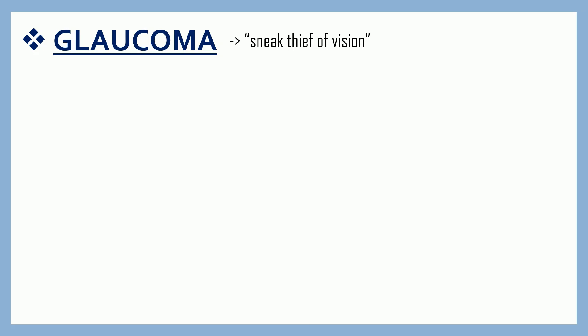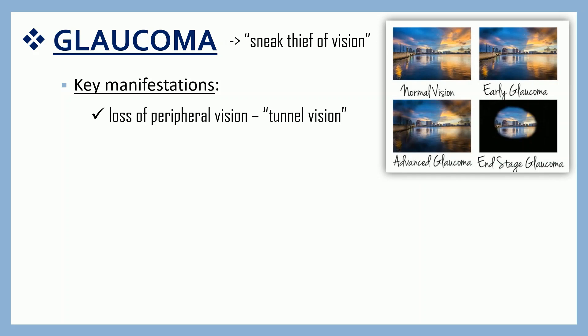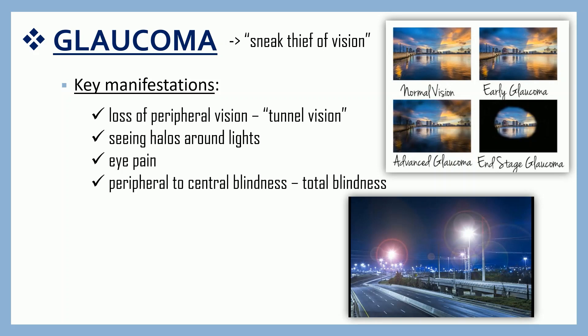Glaucoma is often called the sneak thief of vision because if symptoms have developed, it is usually late. Common symptoms include loss of peripheral vision, also known as tunnel vision, seeing halos around lights, and eye pain. Finally, it progresses from peripheral to central blindness, which can lead to total blindness if not detected early.